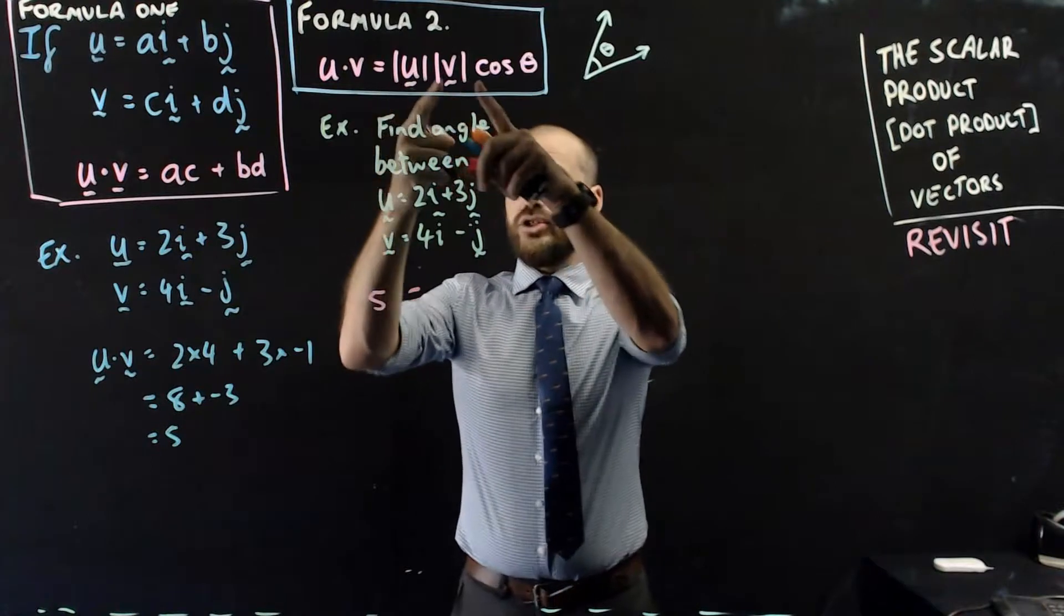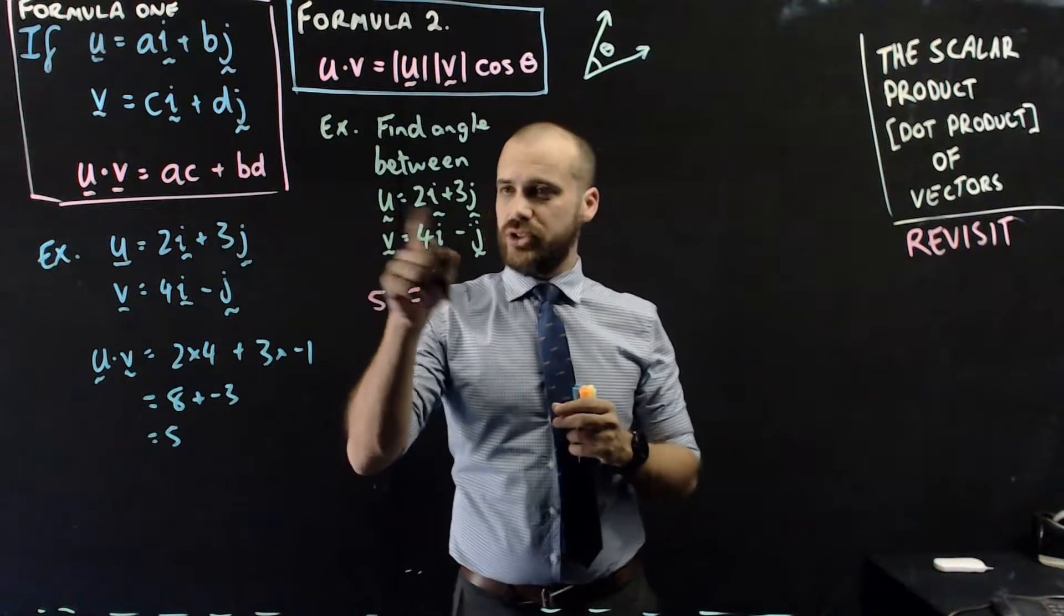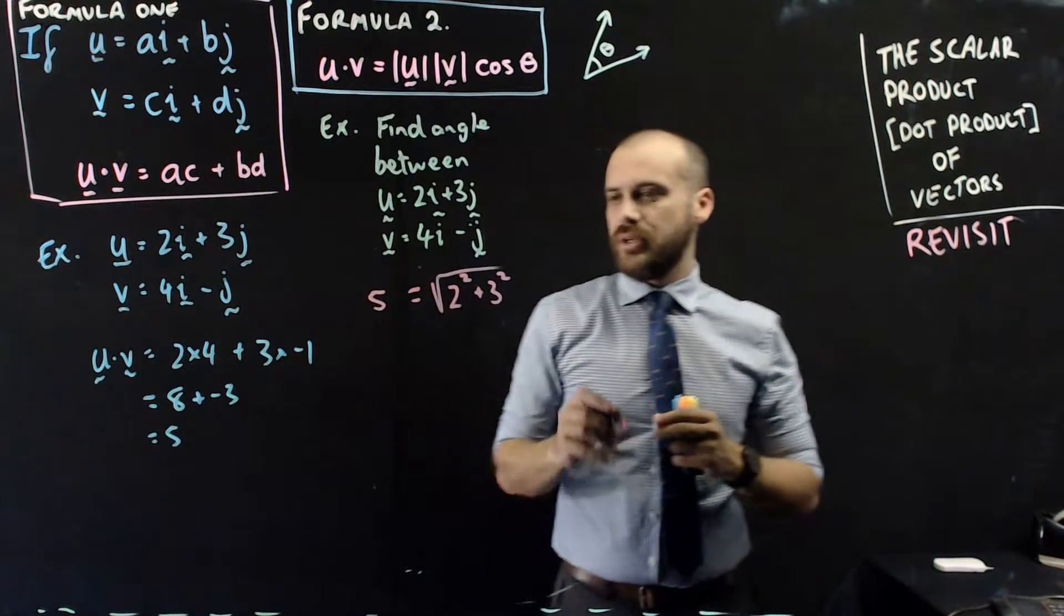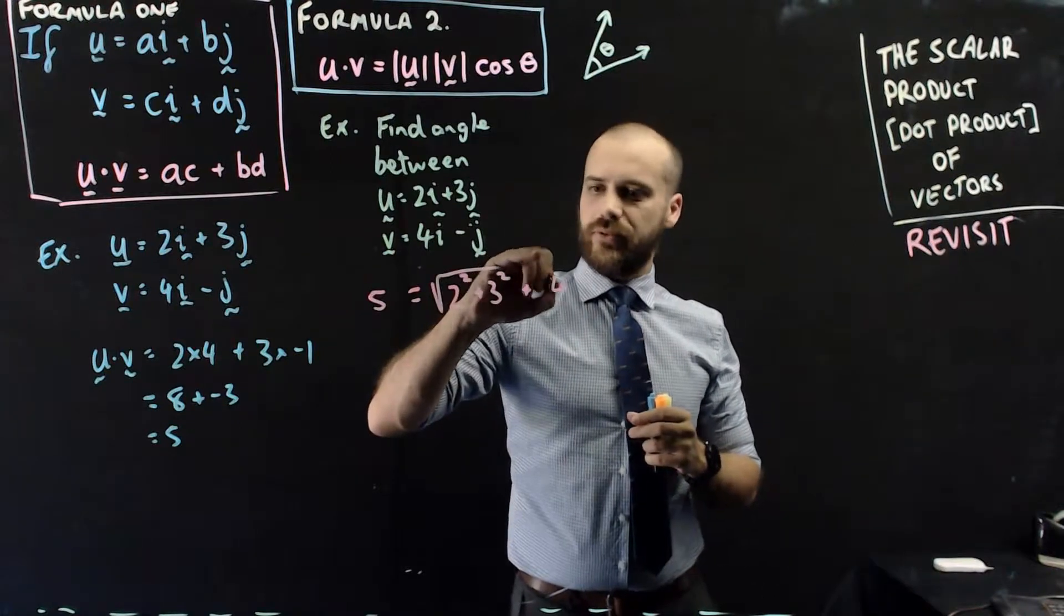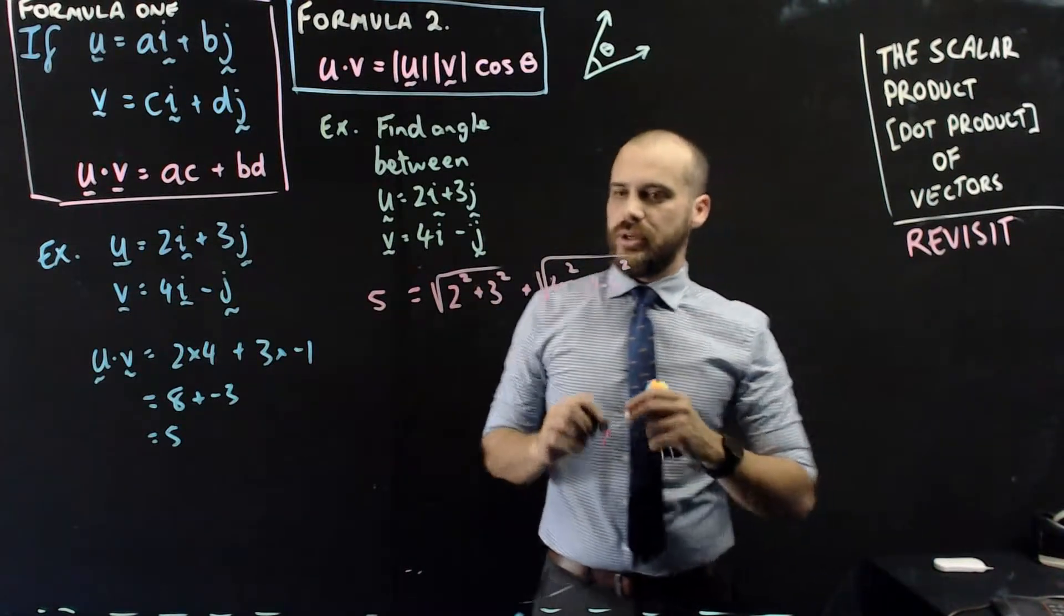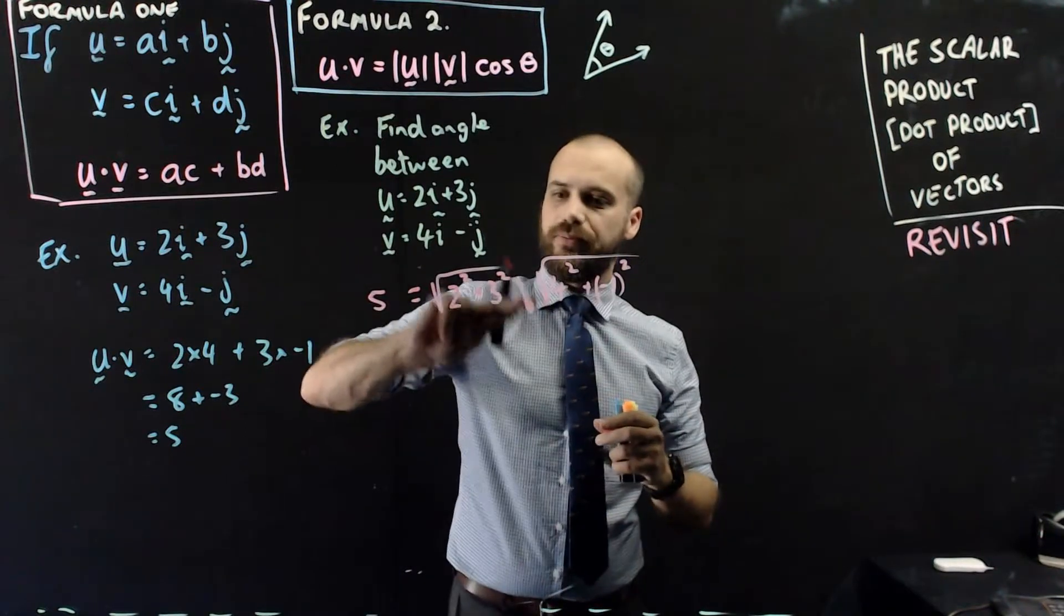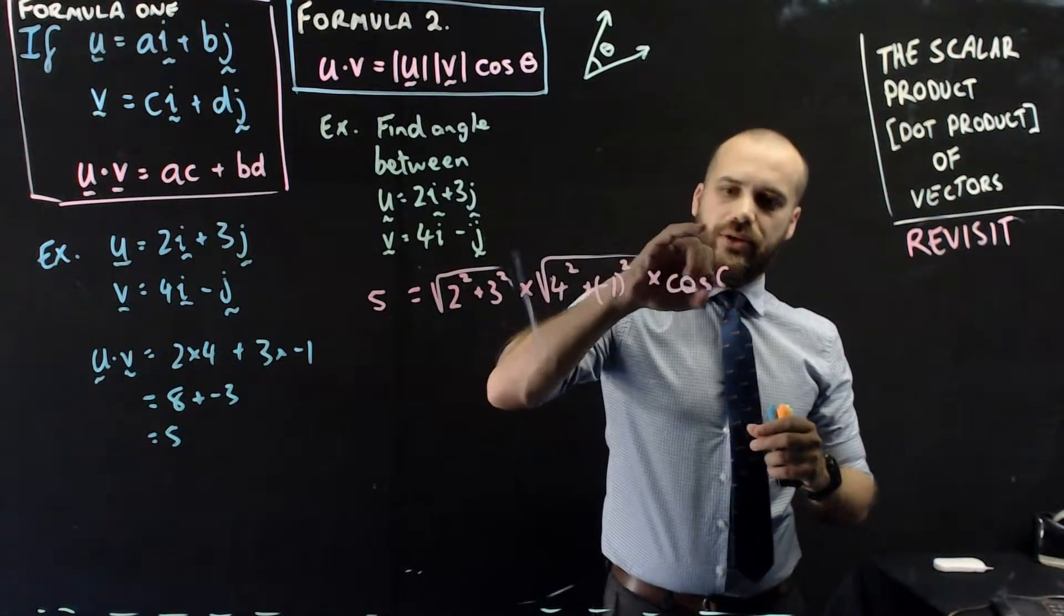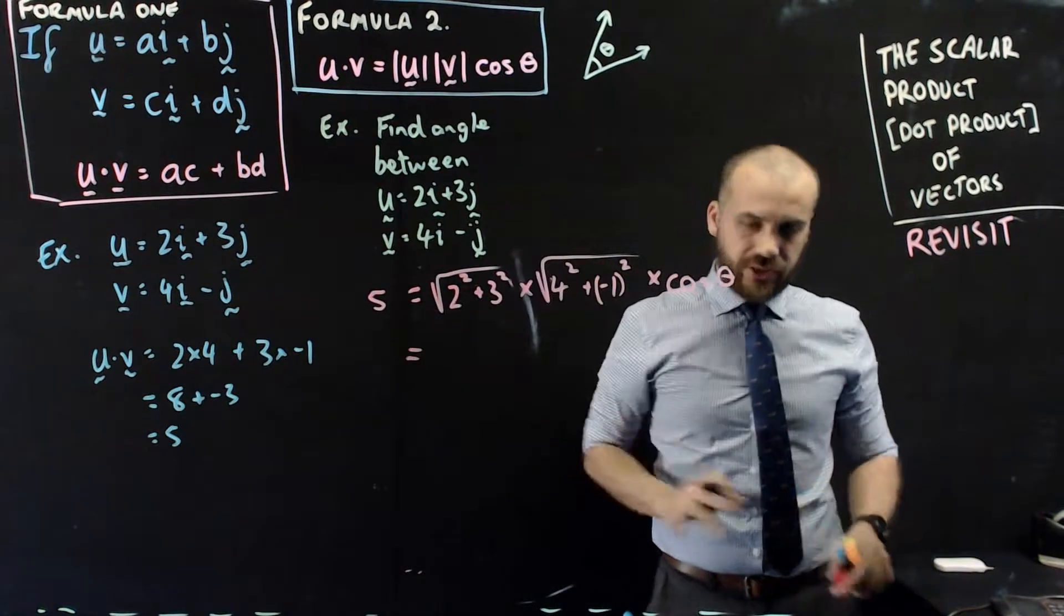Now, I'm going to need the magnitude of the two vectors, which I can find easily enough. The magnitude of u is going to be two squared plus three squared square root, and the magnitude of v is going to be four squared plus negative one squared square root. It should be multiply, shouldn't it? Yeah, multiply. And then multiply that by cos theta, which is the thing I don't know. I'm going to put that into my calculator, get some numbers for you.